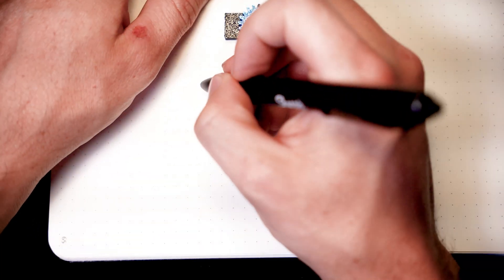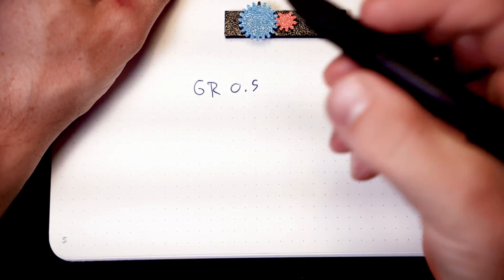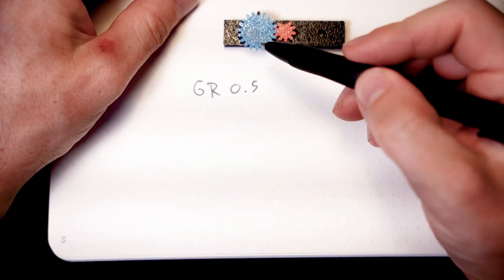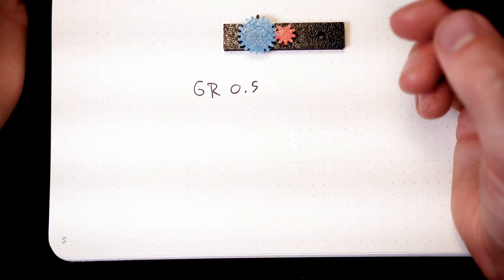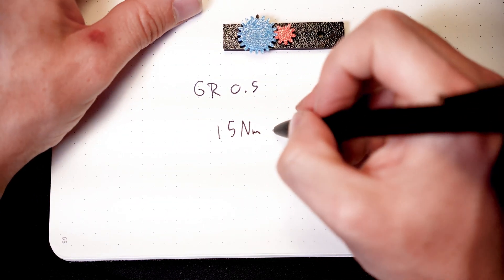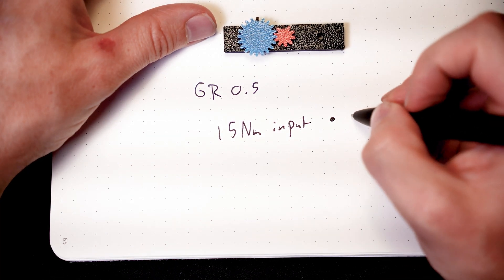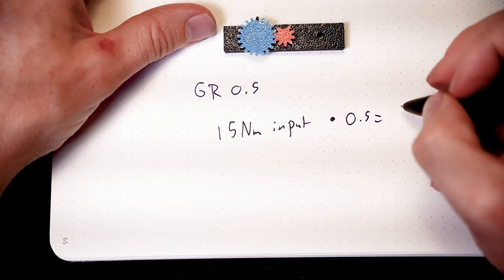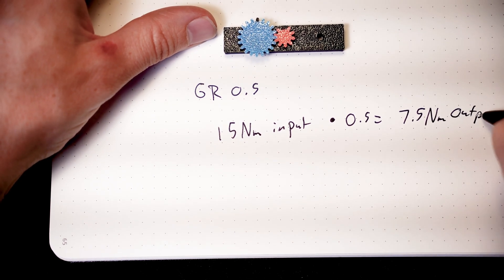So now that we know that our gear ratio is 0.5, in order to find the torque output, we can just simply multiply that in. So if let's assume that our input gear is this 20 tooth and we're driving it with a 15 newton meter motor input. If we multiply that by 0.5, we get a 7.5 newton meter output.